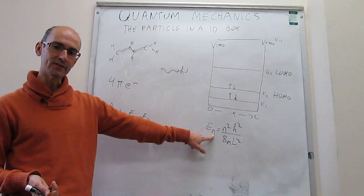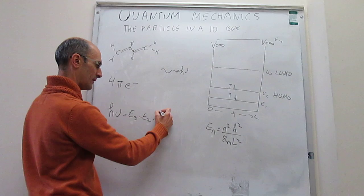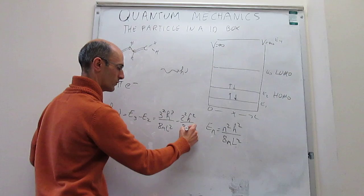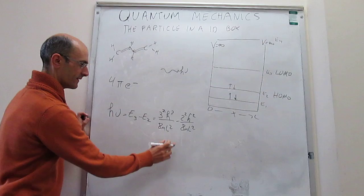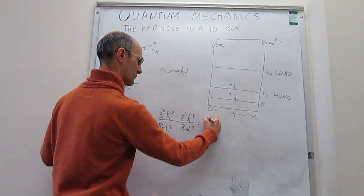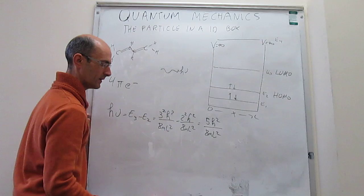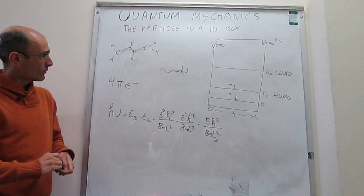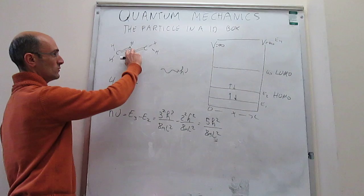We are ready to solve because we know the energies of these states from the particle in a 1D box model. The energy of state n=3 is 3² h² over 8mL², and the energy of state n=2 is 2² h² over 8mL². The difference is (9 − 4) h² over 8mL², which equals 5h² over 8mL². We know h and m (the electron mass), so the only remaining quantity is the length of the box L.